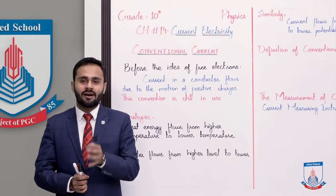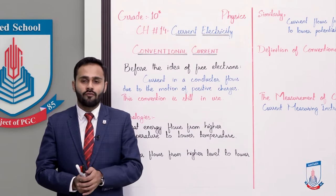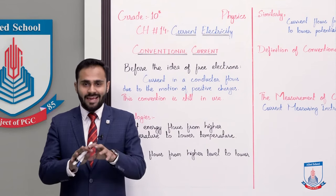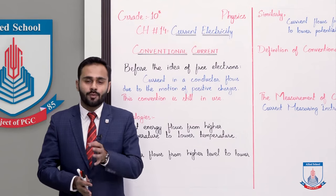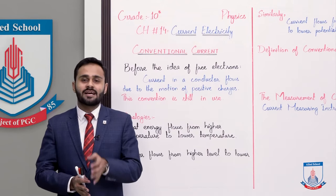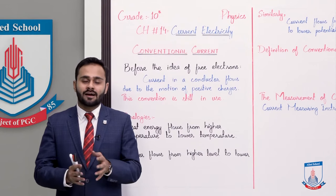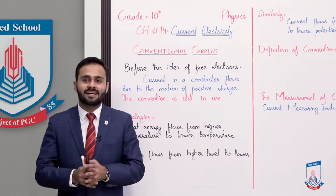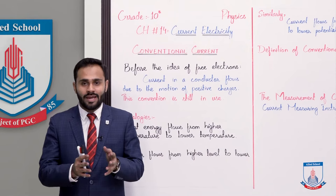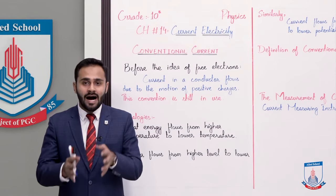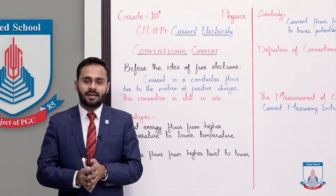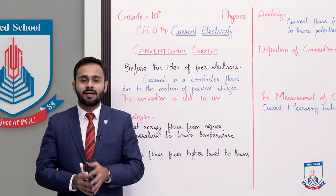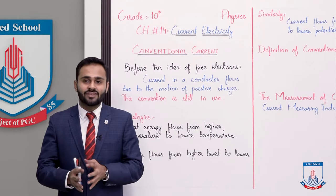Current also flows due to the motion of positive charges. Because it is a convention that current flows due to the motion of positive charges, that's why current flows from the positive terminal to the negative terminal, and that's why we call it conventional current.